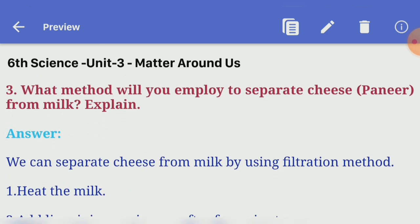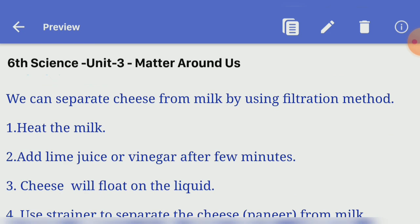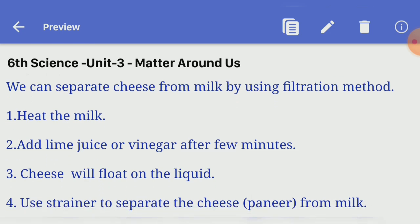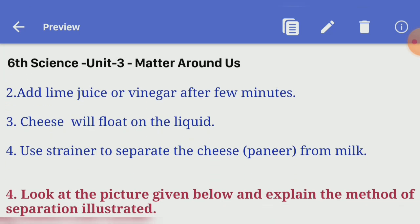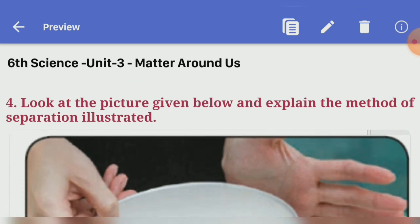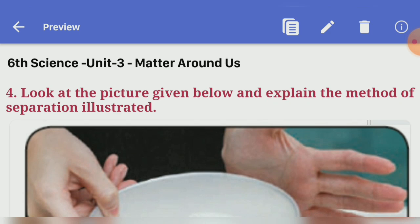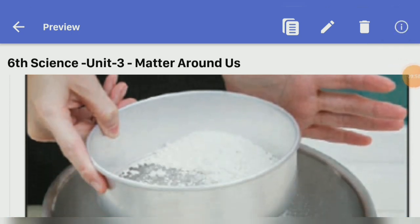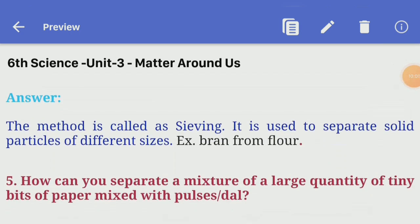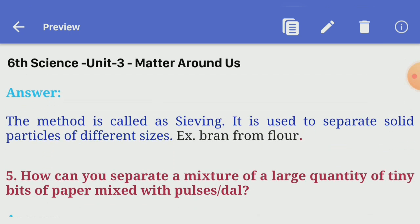Third question: what method will you apply to separate cheese (paneer) from milk? Explain. Answer — we can separate cheese from milk by filtration. First, heat the milk. Add lime juice or vinegar; after a few minutes, cheese will float on the liquid. Use a strainer to separate the cheese from milk. Fourth question: look at the picture given below and explain the method of separation illustrated. The method is sieving — it is used to separate solid particles of different sizes, example bran from flour.